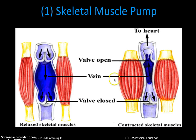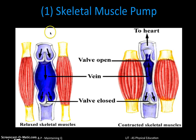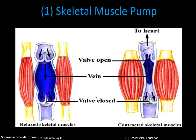When the muscles contract, they massage or squeeze the vein, and the pressure of that squeeze forces blood upwards against gravity through the valves. When the muscles relax, the blood wants to come back down but can't because the valves snap shut. With regular contraction and relaxation, you get a massaging action that constantly pumps blood upwards against gravity, eventually returning it to the heart — that is the skeletal muscle pump.